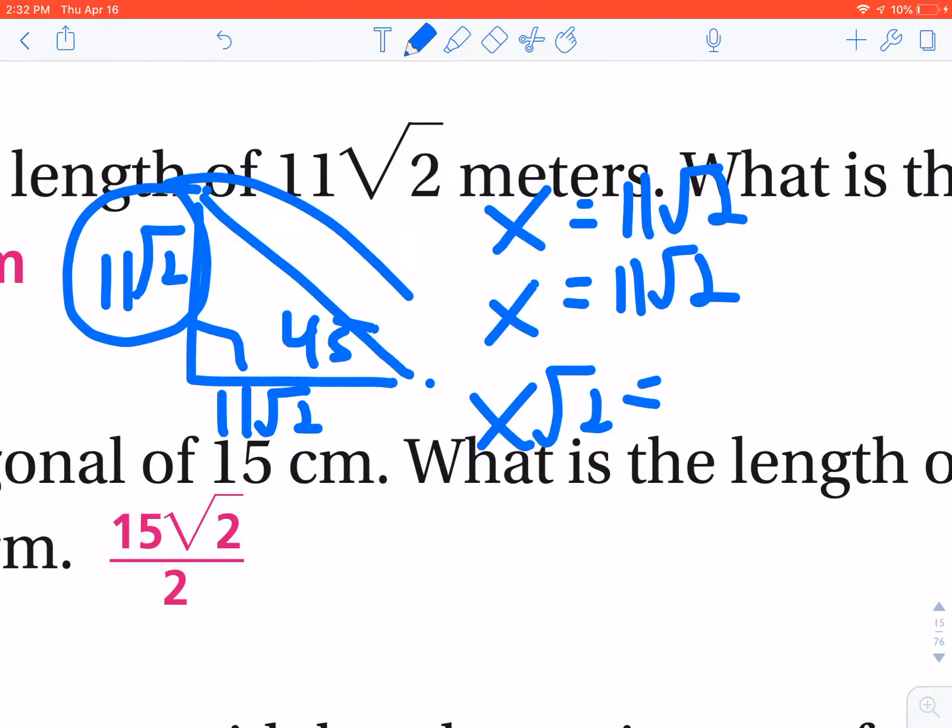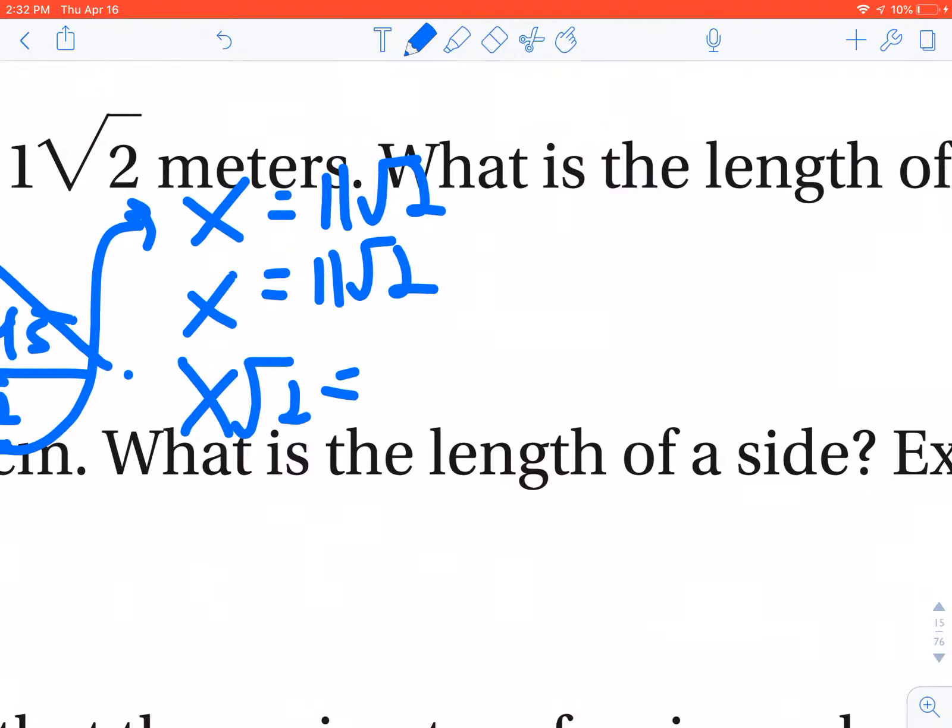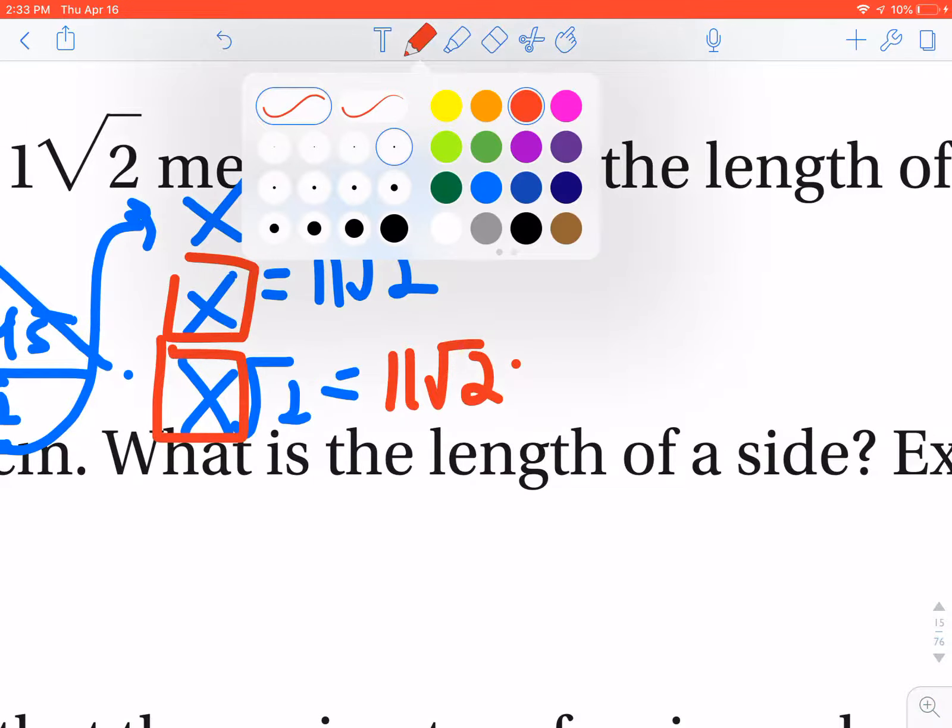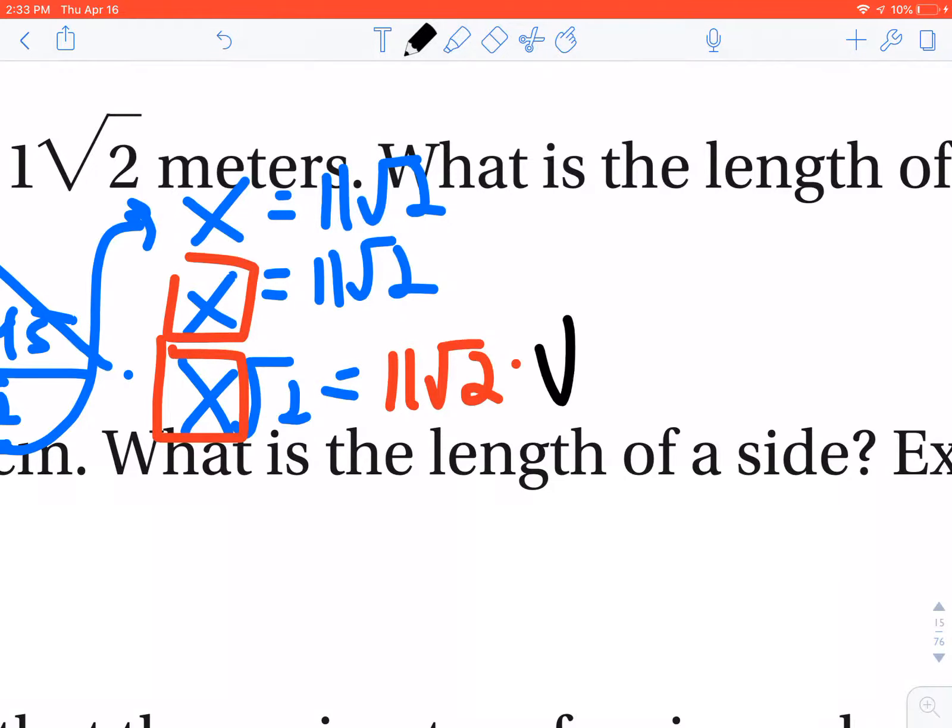Just because there's a radical 2 in this does not assume or guarantee that it's the hypotenuse. It's where the value is actually given to you on the figure. It's on the leg, so it is a leg. My rule tells me that to find the hypotenuse, I take whatever the leg is, and the leg is 11 radical 2, and I multiply that by radical 2.